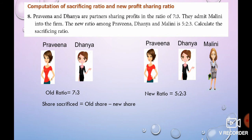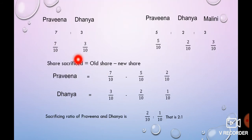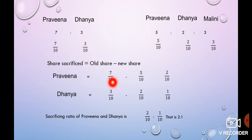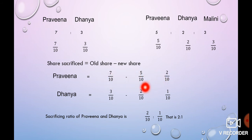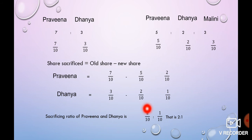Here, Previna's old share is 7 by 10, new share is 5 by 10. Denominator is equal, so we are going to subtract. Dania's old share is 3 by 10, new share is 2 by 10. So, sacrificing ratio of Previna and Dania is 2 by 10 is to 1 by 10. That is, 2 is to 1.